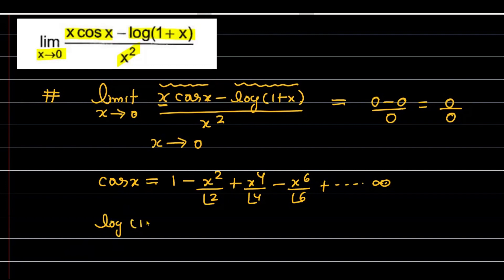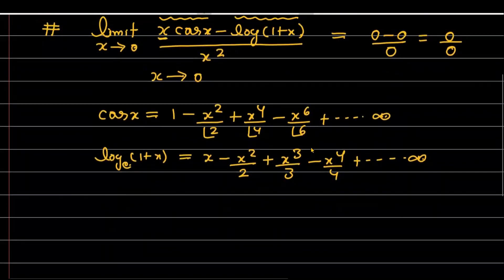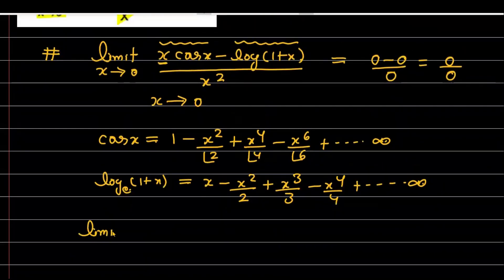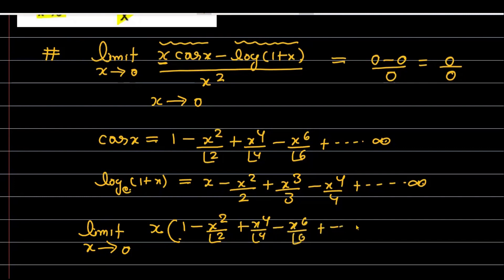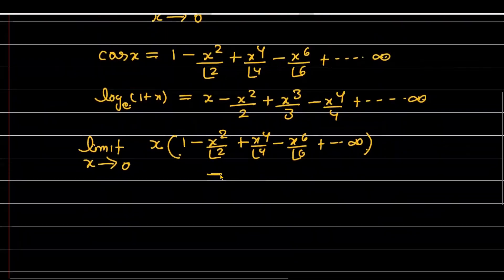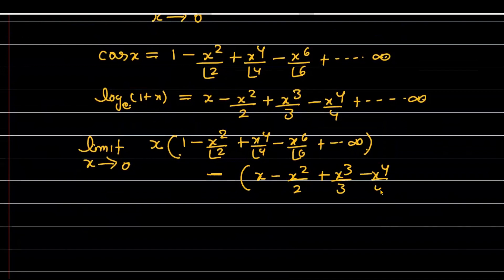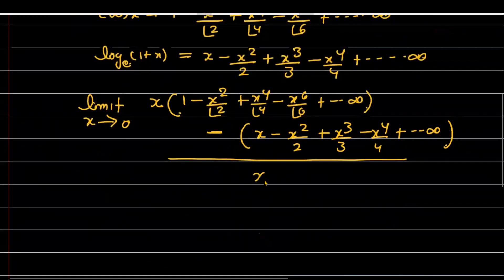For log(1+x), whose base is natural (i.e., e), the expansion is x − x²/2 + x³/3 − x⁴/4 + … up to infinity. Now let's apply both expansions to the question. You can see there is already one x present; applying the expansion of cos(x) gives 1 − x²/2! + x⁴/4! − x⁶/6! + …, minus the expansion of log(1+x) which is x − x²/2 + x³/3 − x⁴/4 + …, all divided by x² in the denominator.